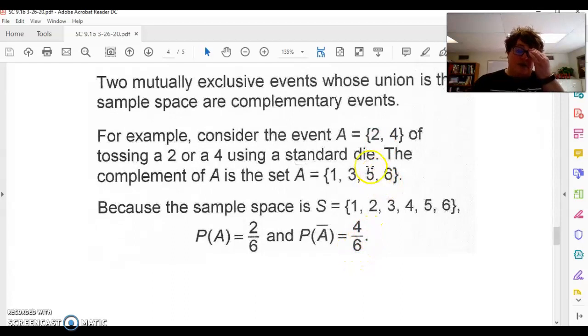So when we think about this in terms of probability, the probability of event A, which is either rolling a 2 or a 4, is 2 options out of 6. So the probability of the complement and the little line on top of the A is denoting the complement. That's the notation. So there's four other options that are the complement. So either a 1, 3, 5, or 6. Now, if you add together the probability of A plus the probability of not A, you should have 1.